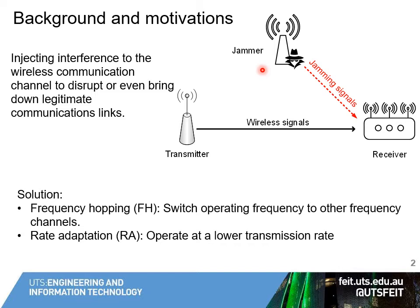So what is a jamming attack? As you can see in this figure, the jammer attacks the channel by sending interference to disrupt or even bring down the communication between the transmitter and the receiver. Currently there are two main solutions to deal with jamming attacks. The first solution is frequency hopping — the key idea is that the transmitter can switch to another channel if the jammer attacks the current channel.